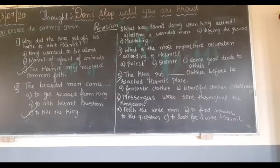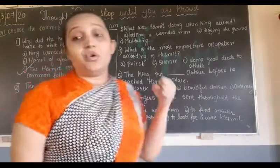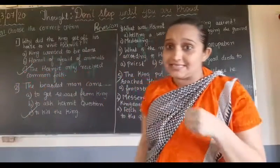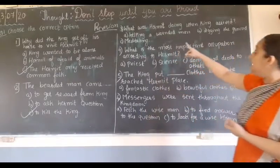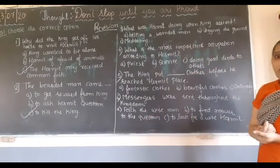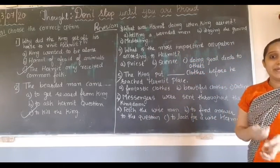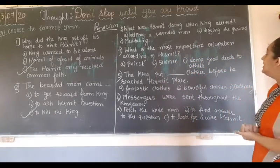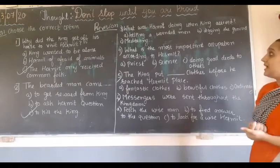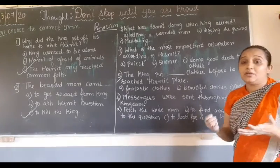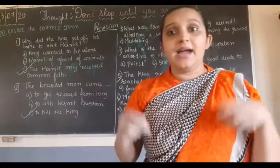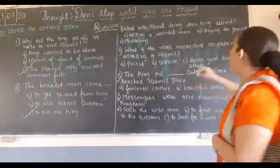What was the hermit doing when the king arrived? When the king arrived at the hermit's place, what was he doing? He was not helping a dead man — that came afterwards. Was he digging the ground or meditating? He was digging the ground.